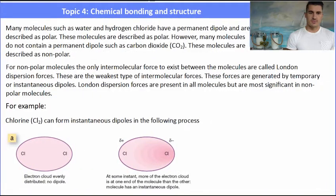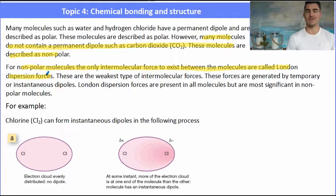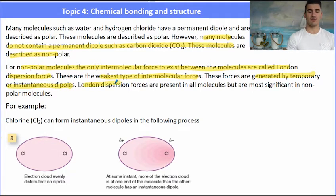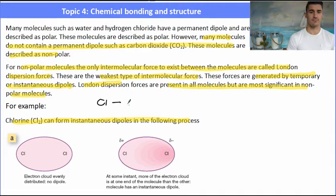So we've discussed polar molecules, but what about those molecules that aren't polar — the ones that don't have a permanent dipole, like carbon dioxide? They're non-polar. For a non-polar molecule, the only intermolecular force that exists is called London dispersion forces, and these are the weakest type of intermolecular forces. They're formed from what we call instantaneous dipoles and are extremely significant for non-polar molecules because they're the only type of force.